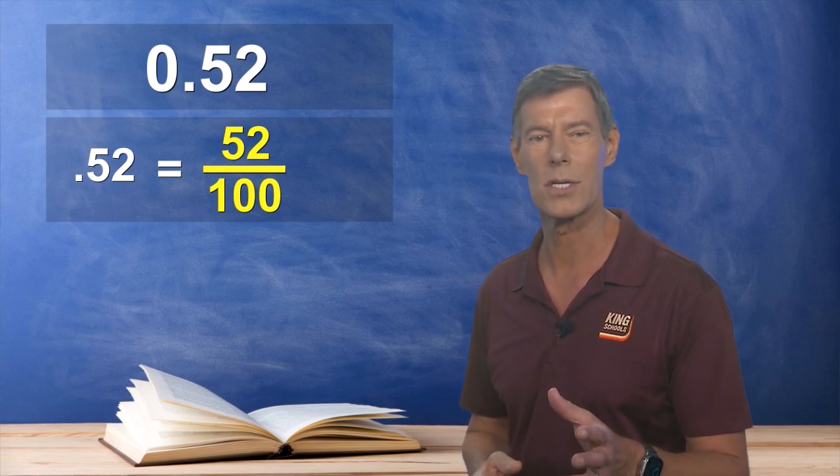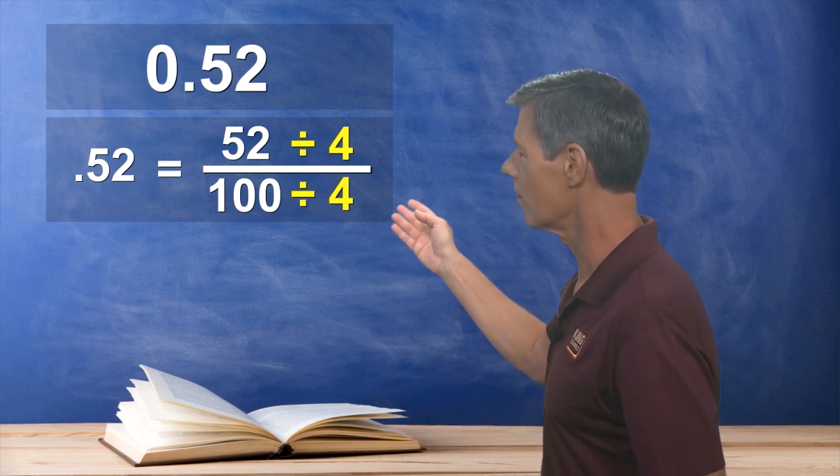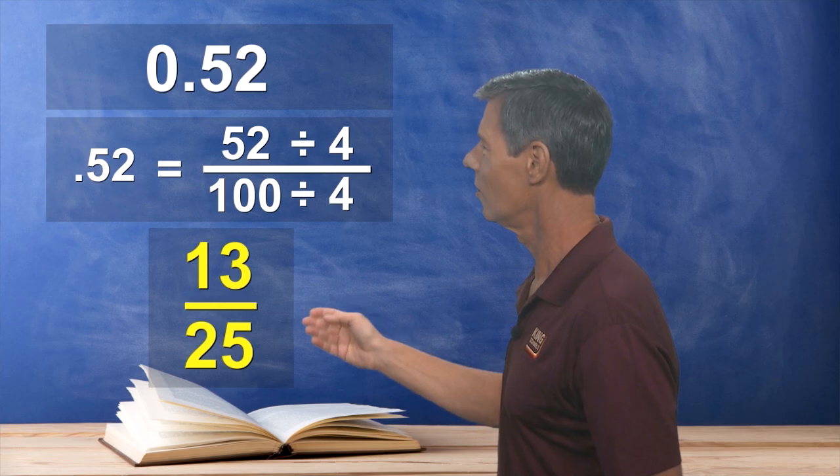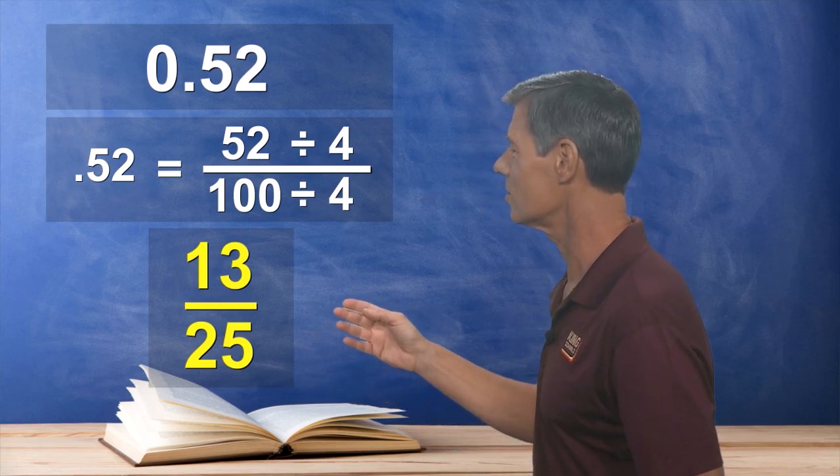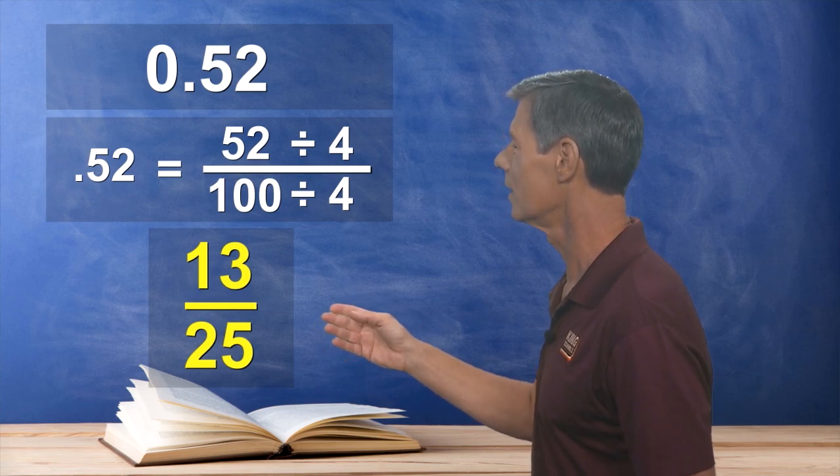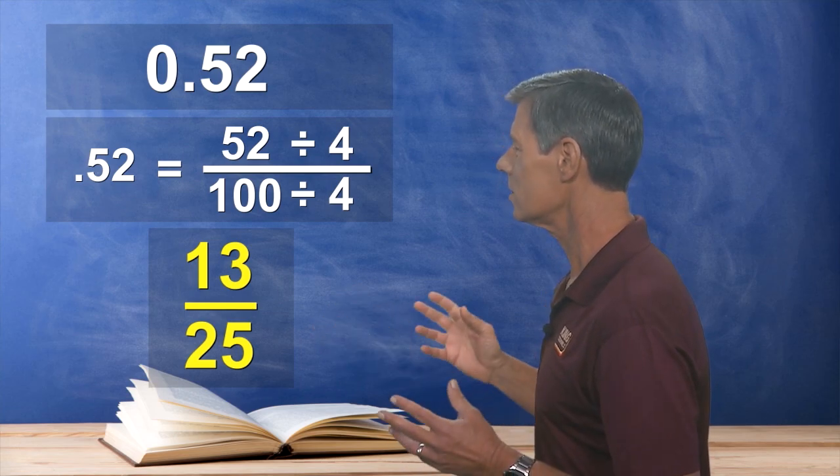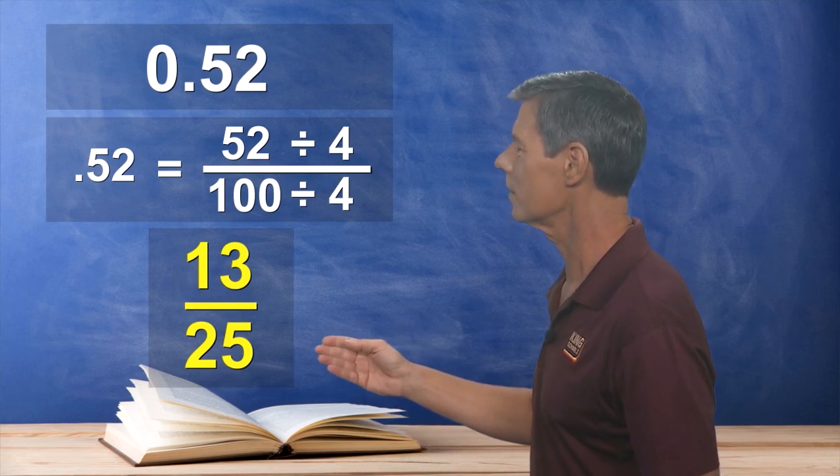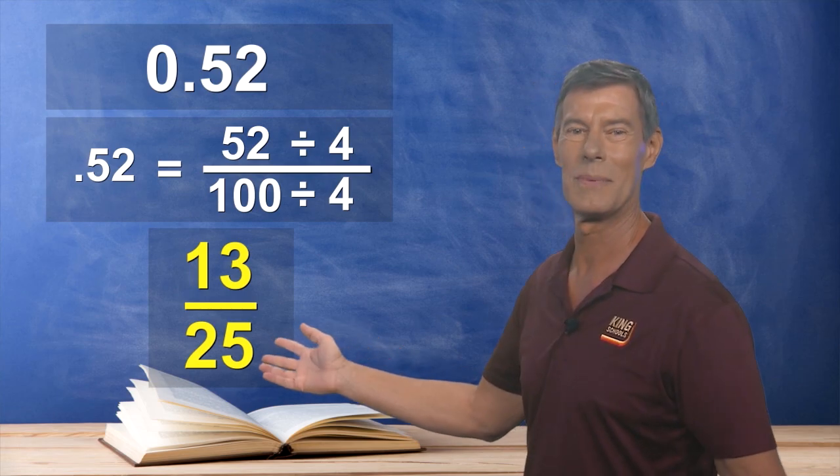Well just by inspection, I can see that both of these numbers can be divided by 4. And when you do that, you get 13 over 25. At this point, it's as simple as you can get, since no further single number could be divided equally into both of these. Now since the number to the left of the decimal point was zero, we have our simplified fraction of 13/25. Piece of cake.